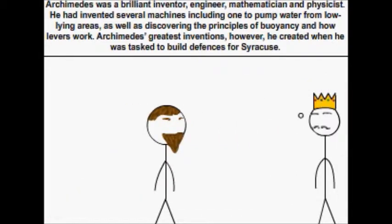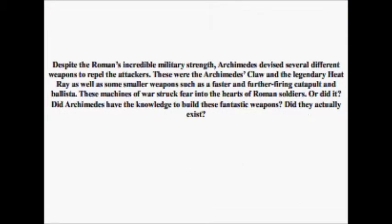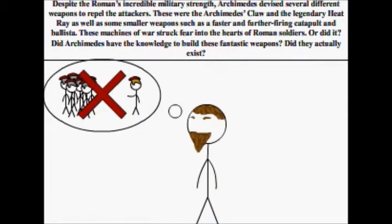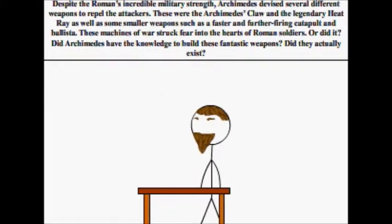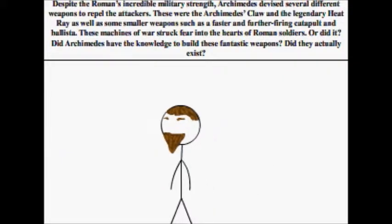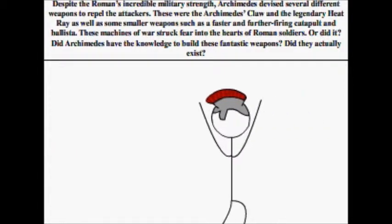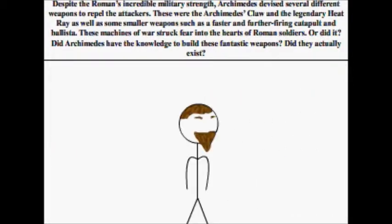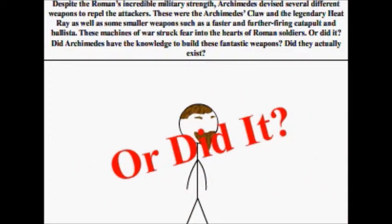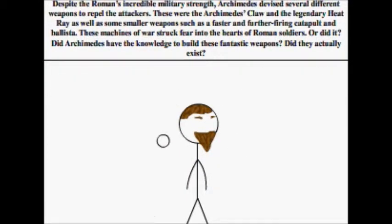Archimedes' greatest inventions, however, he created when he was tasked to build defenses against the Romans, despite their incredible military strength. Archimedes devised several different weapons to repel the attackers. These were the Archimedes' claw and the legendary heat ray, as well as some smaller weapons, such as a faster and further firing catapult and ballista. These machines of war struck fear into the hearts of Roman soldiers. Or did they? Did Archimedes have the knowledge to build these fantastic weapons? Did they actually exist?